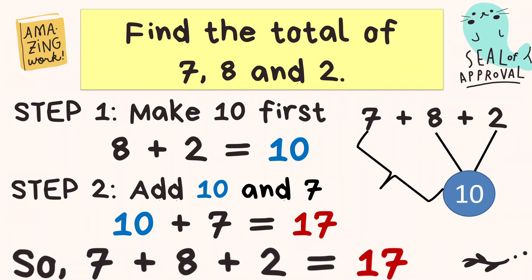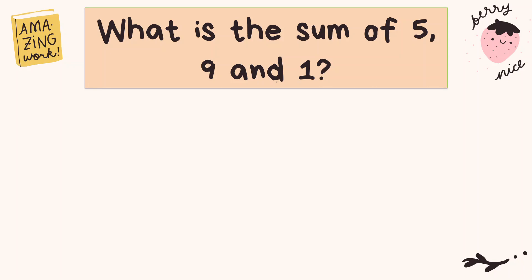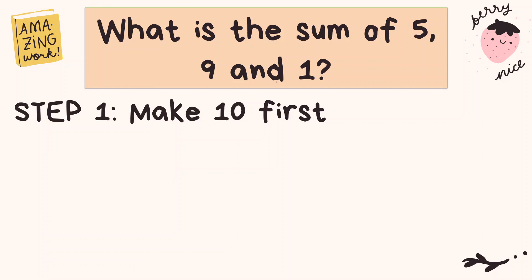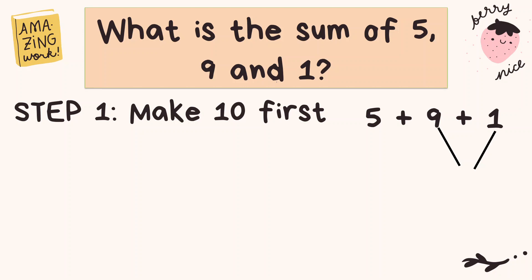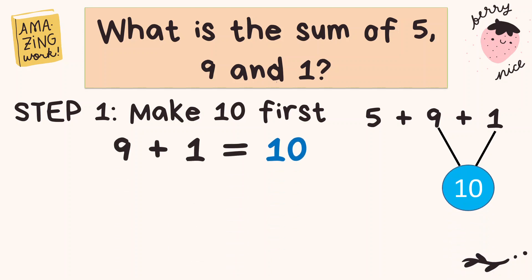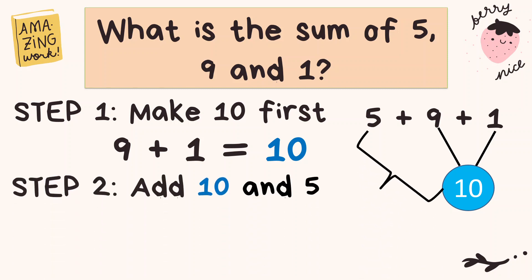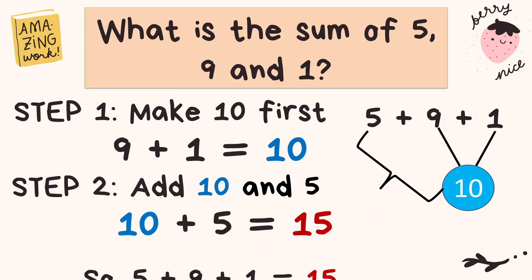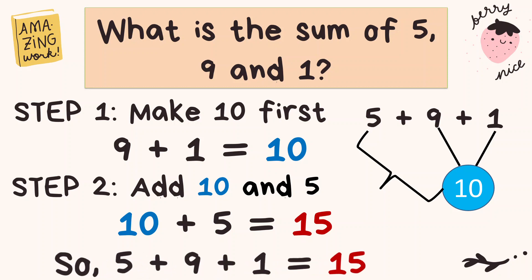Let's try another example. What is the sum of five, nine, and one? The first step is to make ten first. So let's write the addends: five, nine, and one. What numbers are we going to combine to make ten? Yes, it's nine and one. Nine and one is equal to ten. Very good. The second step is to add ten and five, and that is equal to fifteen. So the total of five, nine, and one is fifteen.